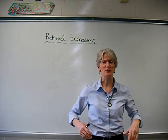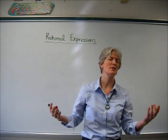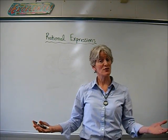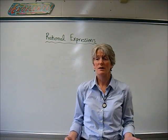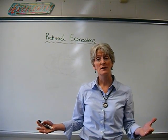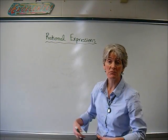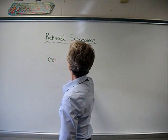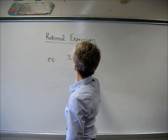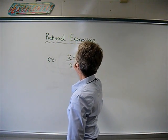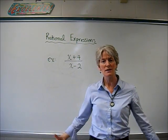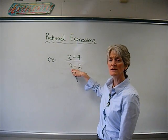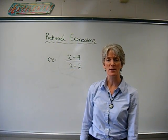Let's talk about rational expressions. We're going to simplify them, multiply them, divide them, and do a whole bunch of fun stuff with these things. A rational expression is simply a fraction when you have a variable in the denominator. Here's an example: x plus 4 over x minus 2. That's a rational expression. I've got a fraction and I have a variable in the denominator.